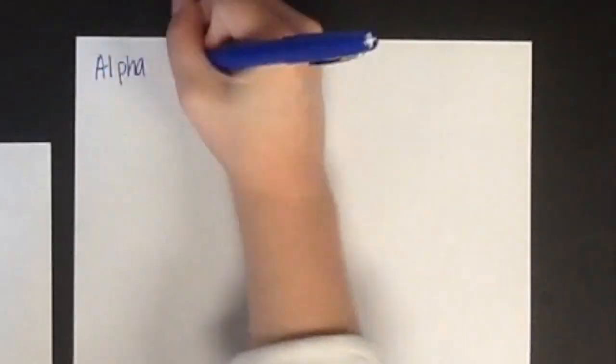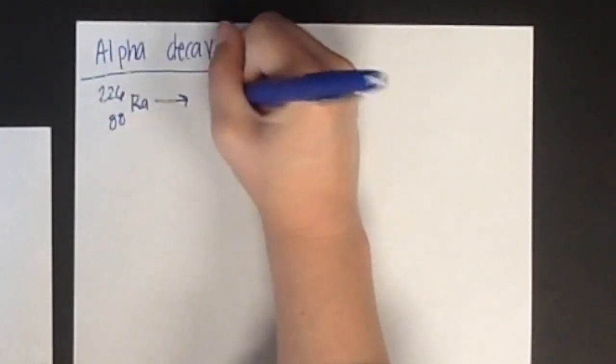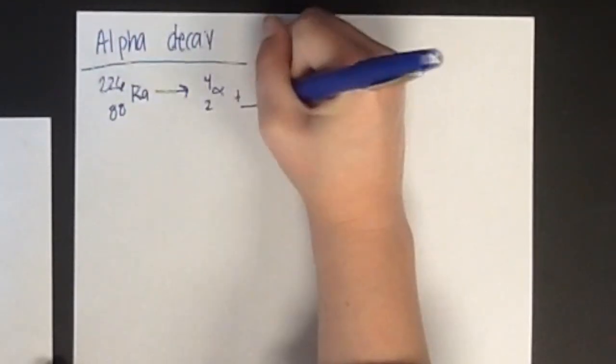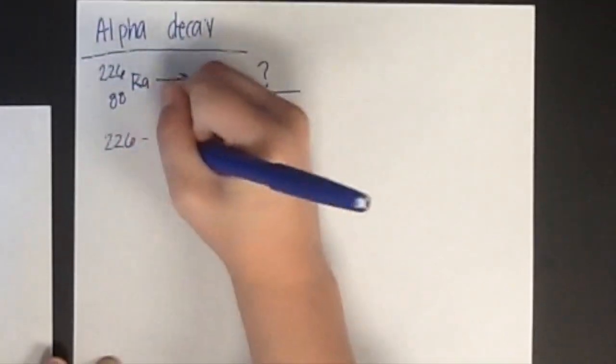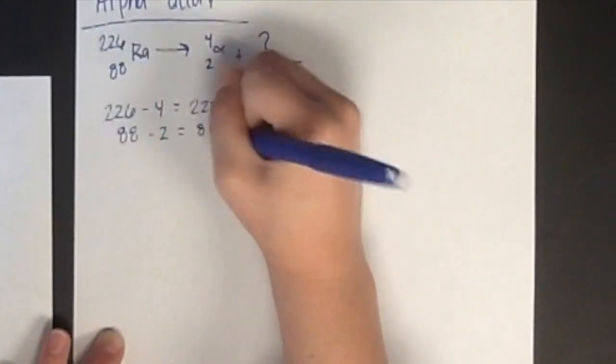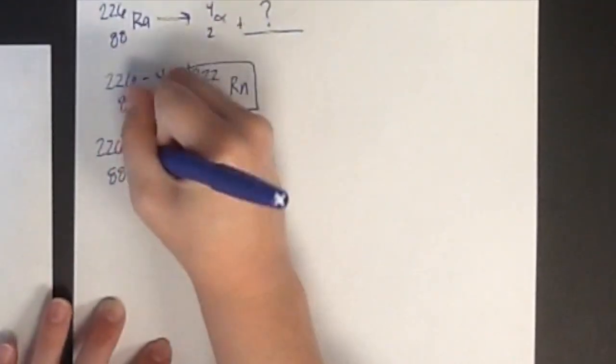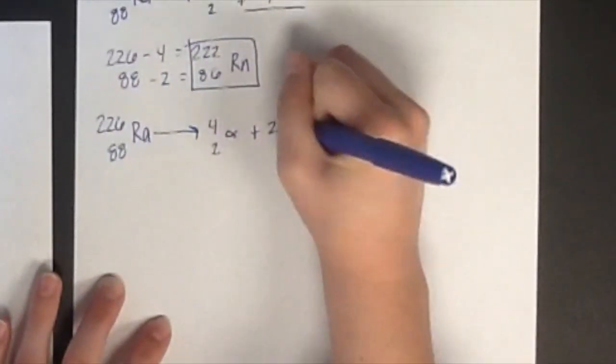An example of alpha decay of radium-226 is represented by the nuclear equation Ra goes to alpha plus Rn. In alpha decay, the atomic number decreases by 2, and the mass number decreases by 4. Therefore, 226 minus 4 is 222, and 88 minus 2 is 86, which is Rn on the periodic table.